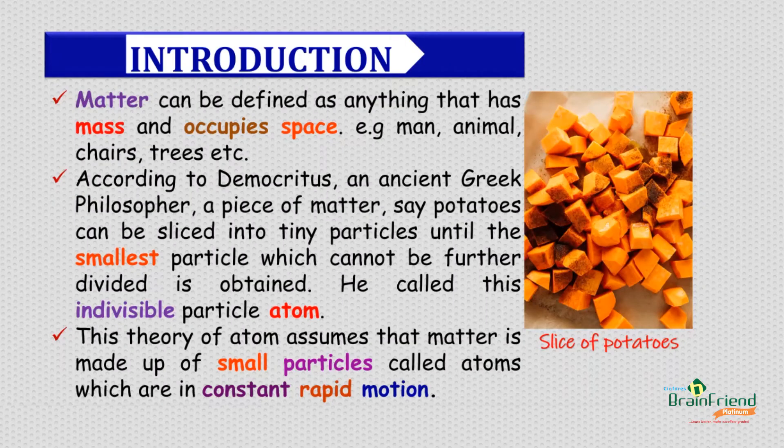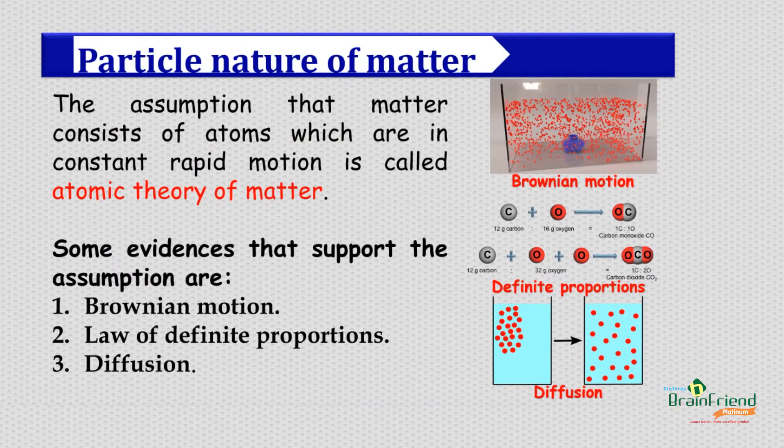Just like I mentioned earlier, matter is simply anything we can find around us that takes up space and has mass. A Greek philosopher named Democritus did a very intensive study about matter and he came up with a theory that we refer to as the atomic theory. This theory says that matter is made up of small, indivisible particles that are called atoms. These atoms are always in constant motion.